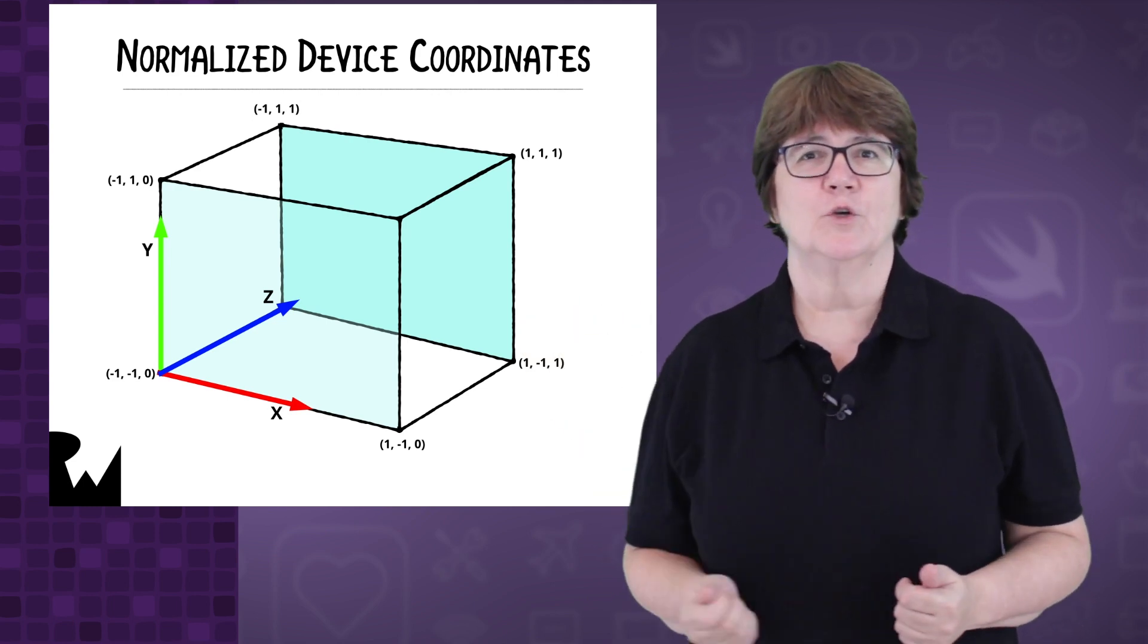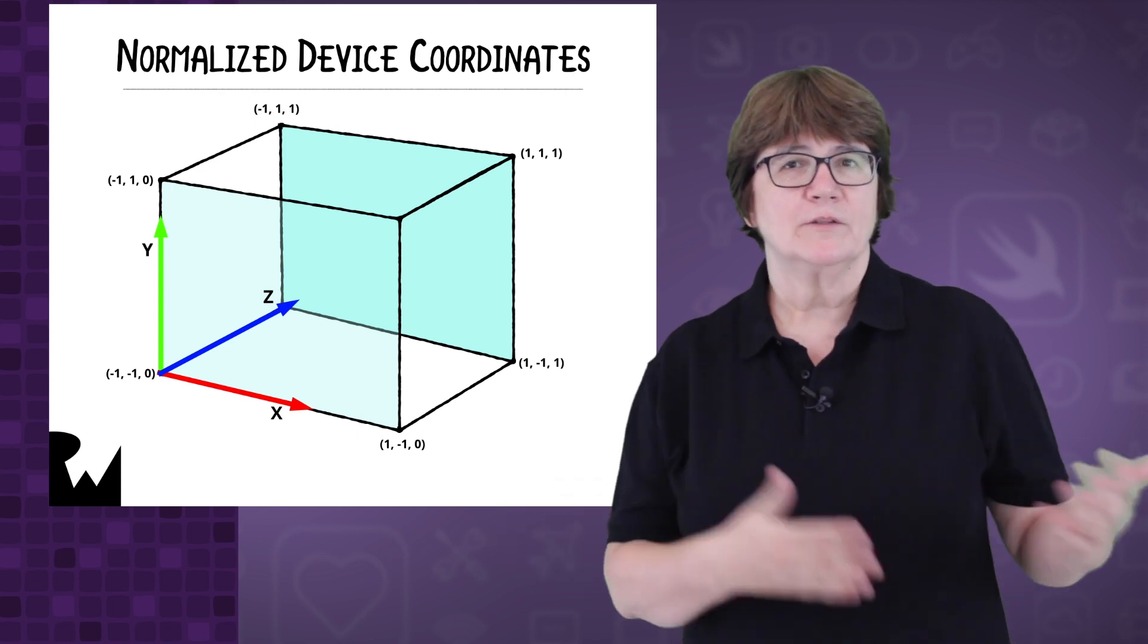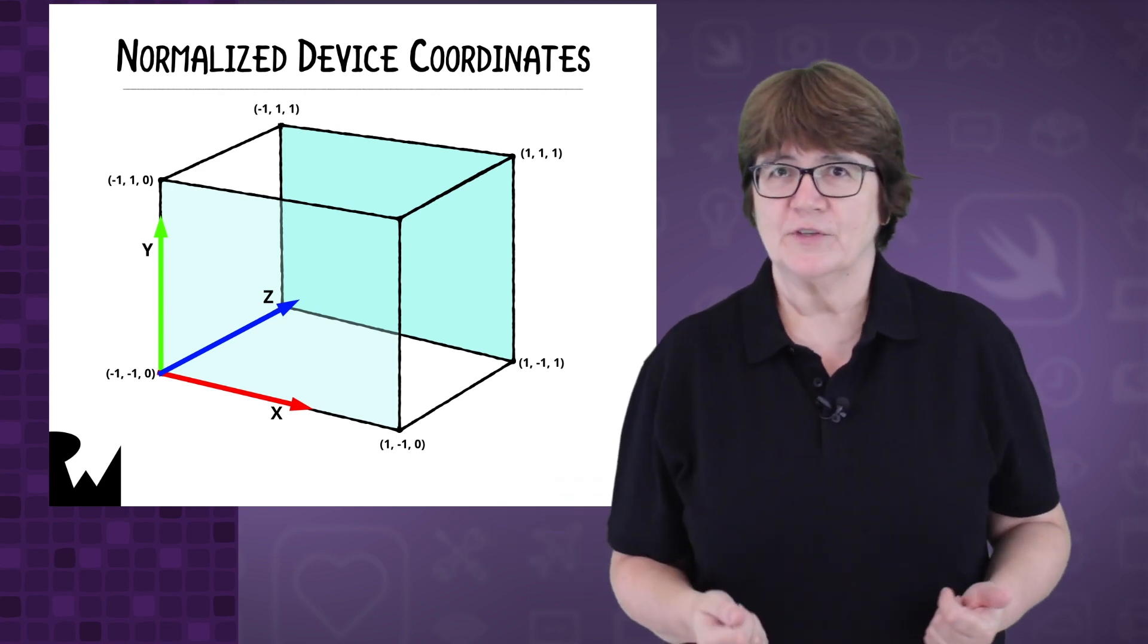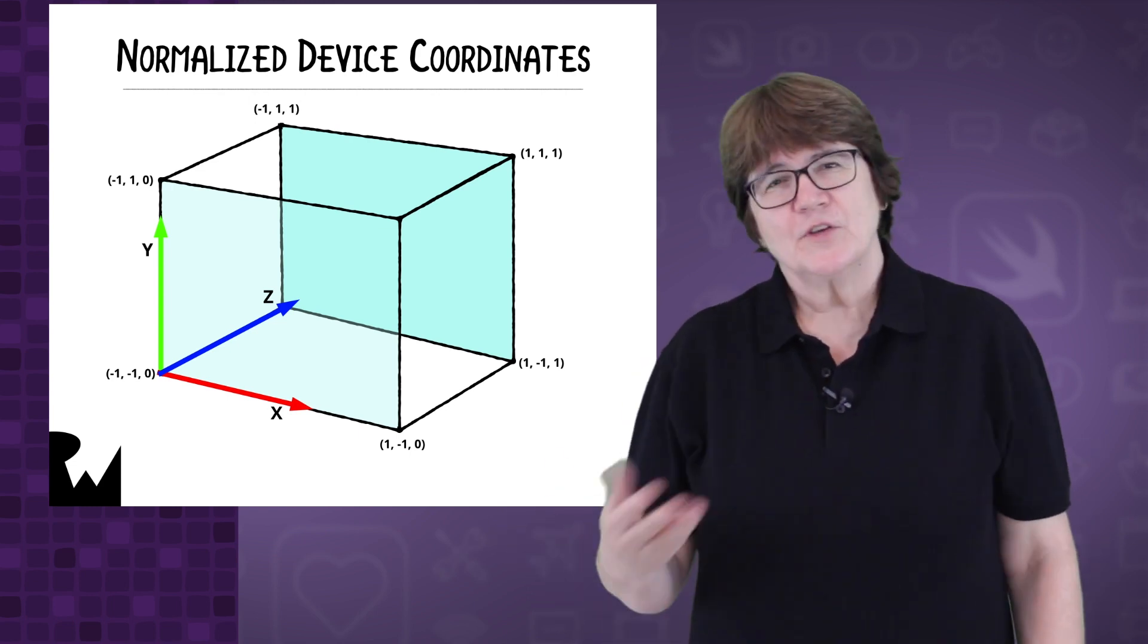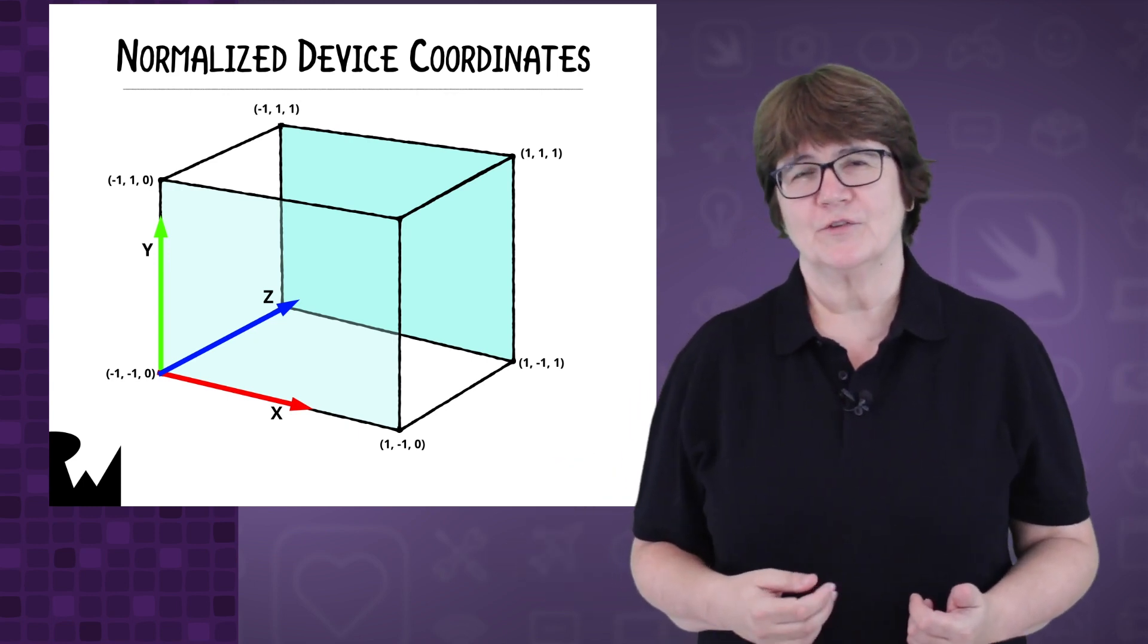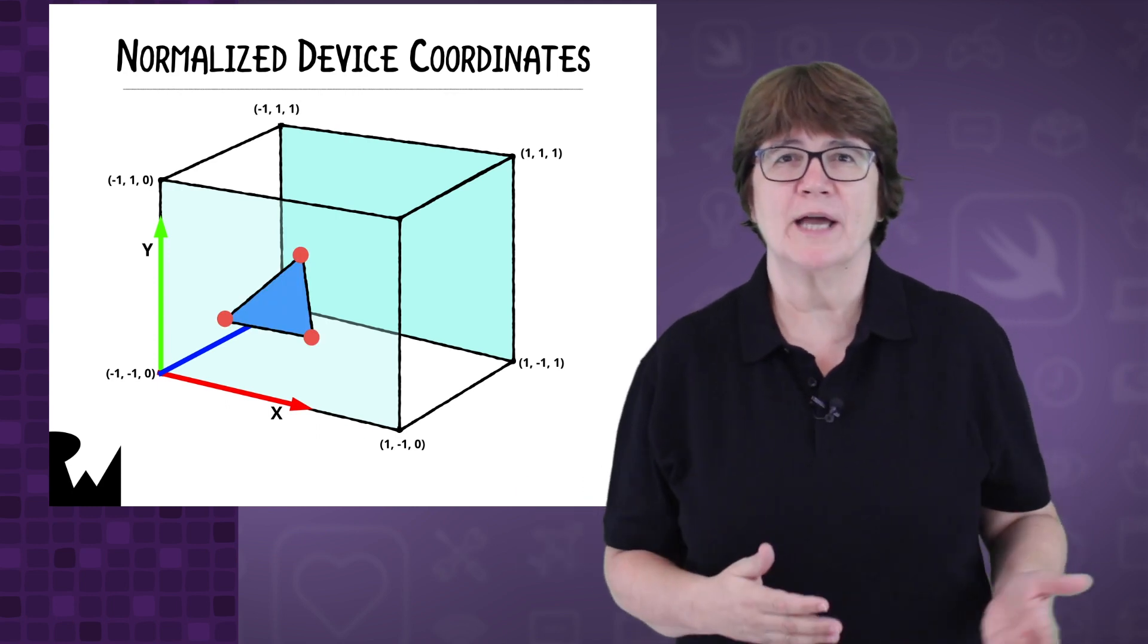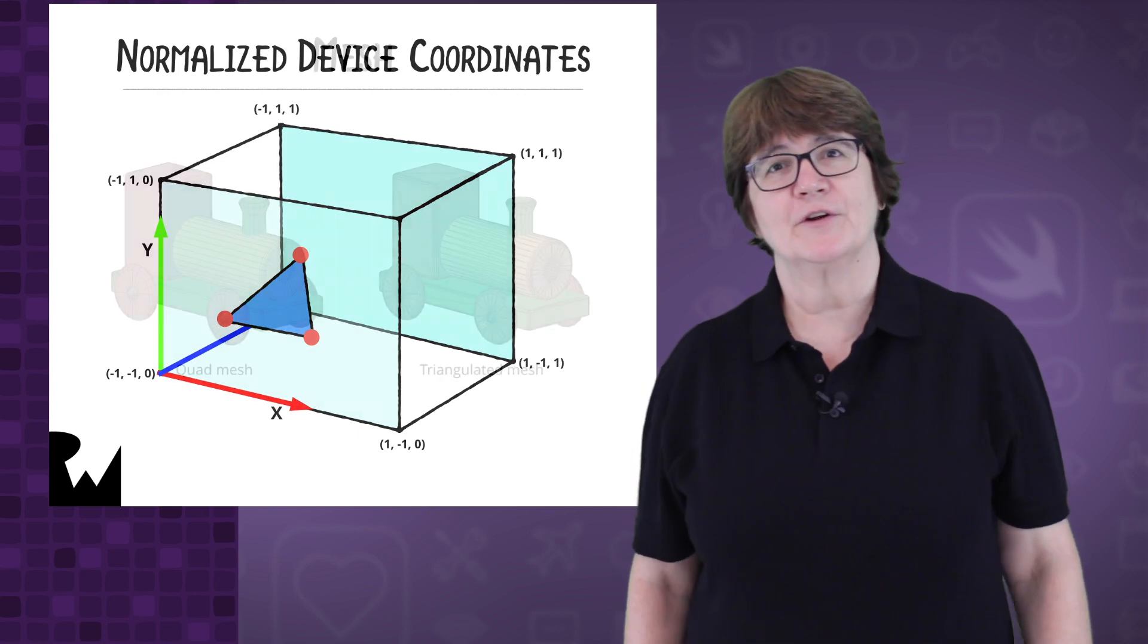Notice that this is a half cube. The x and y values go from minus one to one, but the z-axis goes from zero to one. This coordinate set is called Normalized Device Coordinates or NDC. In the demo, we'll position the triangle at the front of the space with z being zero.